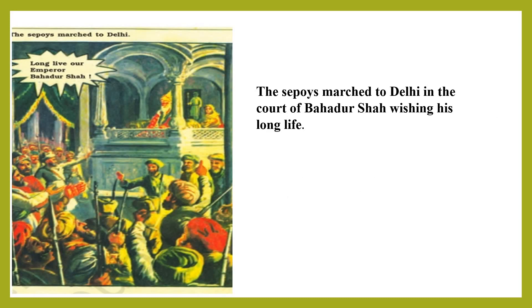The sepoys went to Delhi to the court of the last Mughal emperor, Bahadur Shah Zafar, wishing him long life. They made him the leader and commander-in-chief against the company. At last, he was imprisoned by the British and sent to Rangoon.